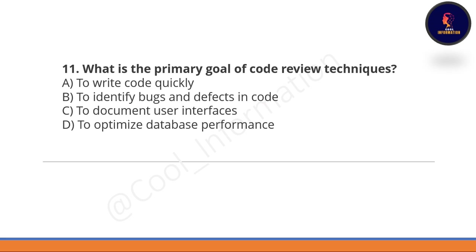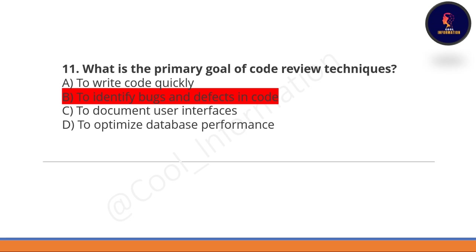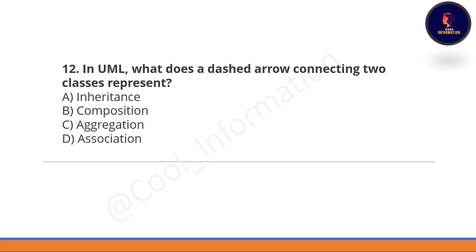Next question: what is the primary goal of code review techniques? Option B is correct — the primary goal of code review technique is to identify bugs and defects in code. Next question: in UML, what does a dashed arrow connecting two classes represent — inheritance, composition, aggregation, or association? Option C is correct — aggregation is represented by a dashed arrow connecting two classes.